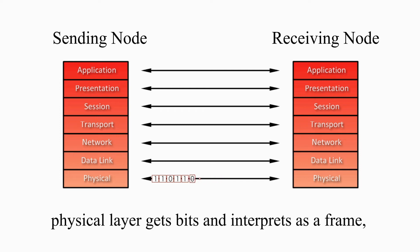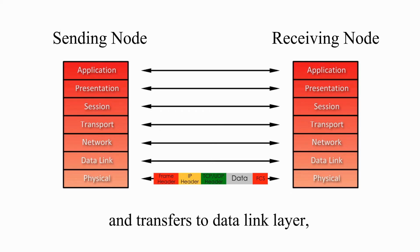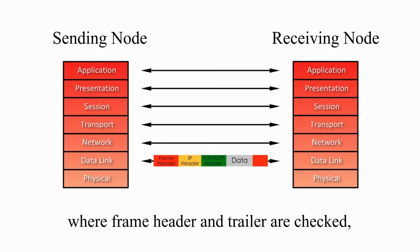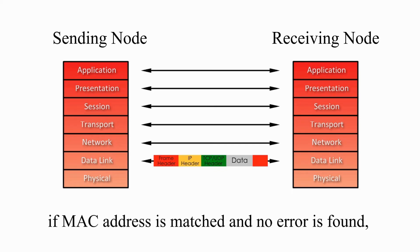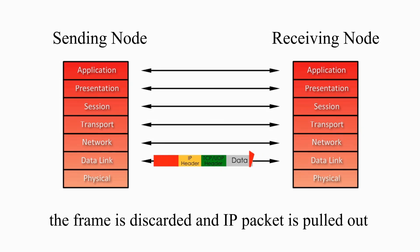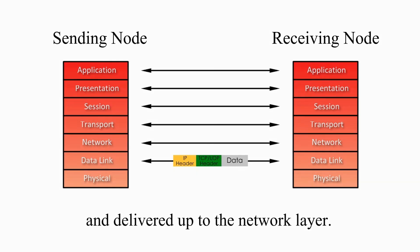Physical layer gets bits and interprets as a frame, and transfers to the datalink layer, where the frame header and trailer are checked. If the MAC address is matched, and no error is found, the frame is discarded, and IP packet is pulled out and delivered up to the network layer.